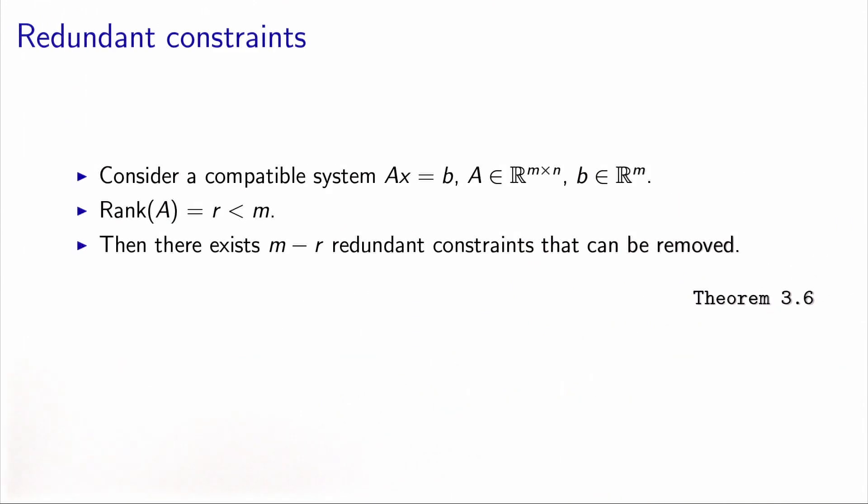Let's generalize this result that we saw on the example. If we have a compatible system Ax equals b with a deficient rank, meaning that the rank of the matrix is strictly less than the number of rows, then it means that there exists m minus r constraints that are redundant and can be removed. Actually, it's relatively easy to prove. If you are interested in the proof, I refer you to the book. It's called Theorem 3.6.